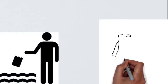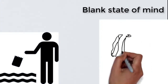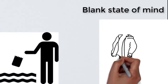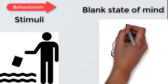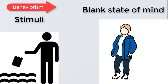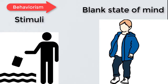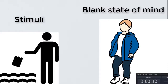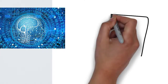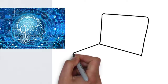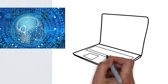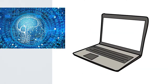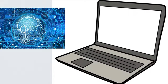In behaviorism, the learner is in a blank state and learning is a response to external stimuli. Behaviorism concentrates on the study of overt behaviors that can be observed and measured. Technology integration in behaviorism is used to keep track of learners' efforts, attitude, and ultimately behavior modification.